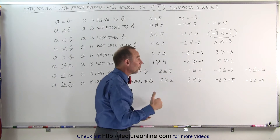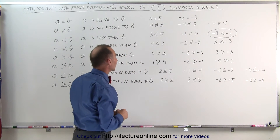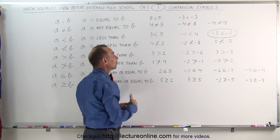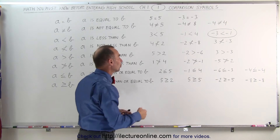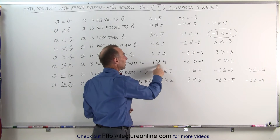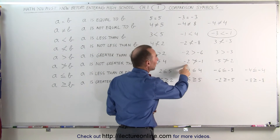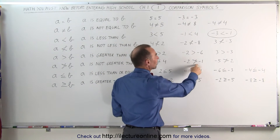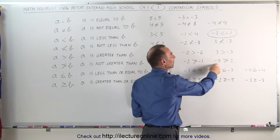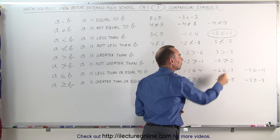All positive numbers are always greater than all negative numbers. If we put a line through the greater than symbol, then the condition is not true. For example, 1 is not greater than 4, negative 2 is not greater than negative 1, and negative 5 is not greater than positive 2.